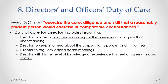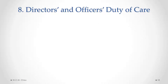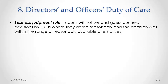A director with a higher level of knowledge or experience is held to a higher standard — for example, if you're a director for a mining company and you happen to be a geologist, you are held to the higher standard of knowledge and experience that you have as a geologist, and therefore must meet a higher standard of care. In applying this duty of care, the courts have clearly said that they will not second-guess the business decisions of directors and officers where they have acted reasonably and the decision was within the range of reasonably available alternatives. This is called the business judgment rule — we don't expect directors and officers to have a crystal ball and be perfect, but only to act reasonably and make a decision within the range of reasonably available alternatives.